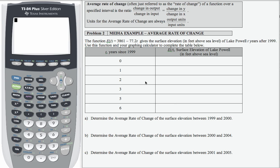In this example, we're going to be looking at a concept called average rate of change. Average rate of change for a specified interval is the ratio change in output over change in input.